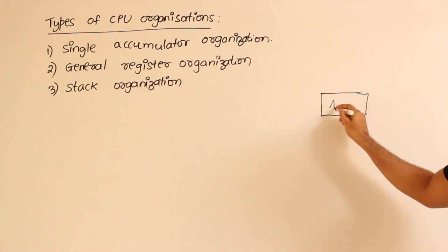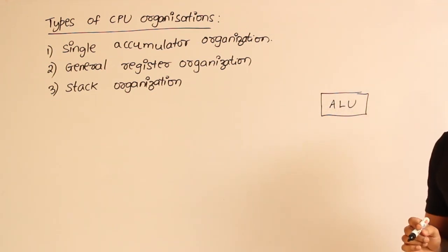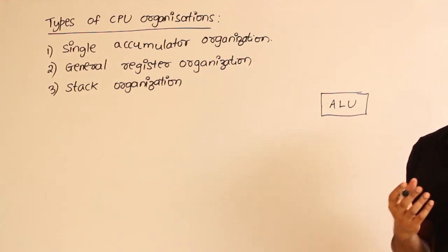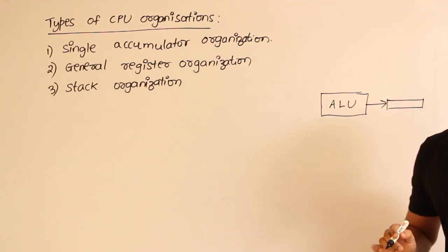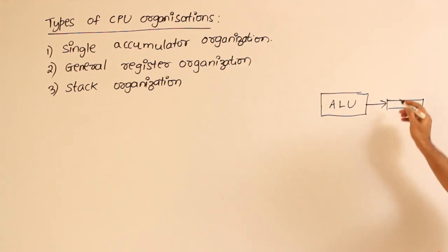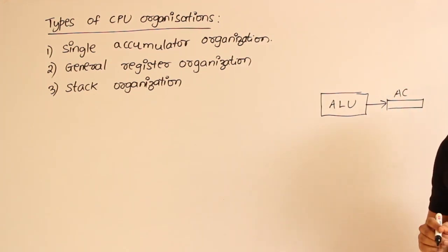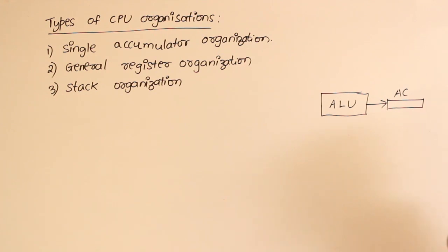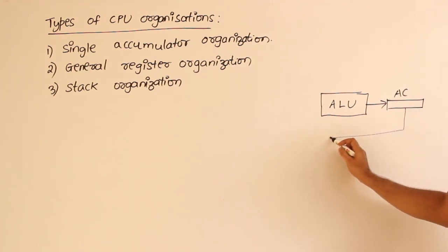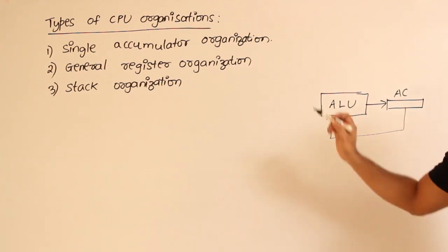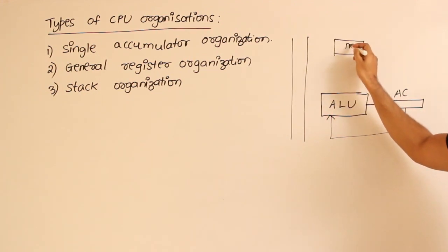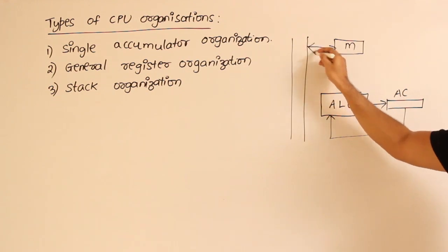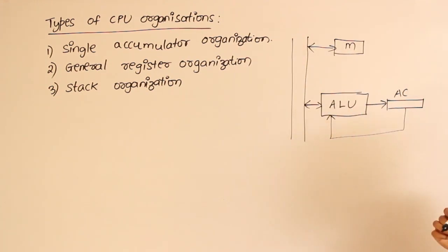This is the arithmetic and logic unit. The ALU will perform some operation like addition, and then it will store the result. For storing the results, most computers have a special purpose register called the accumulator — let's denote it as AC. It is called the accumulator because it accumulates the result, and it can even be given as input back to the ALU. There will also be a data bus to which memory is connected.